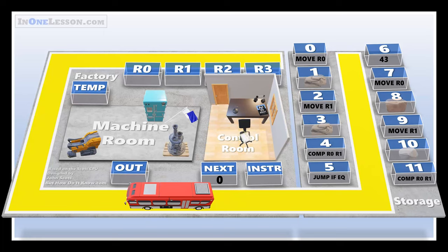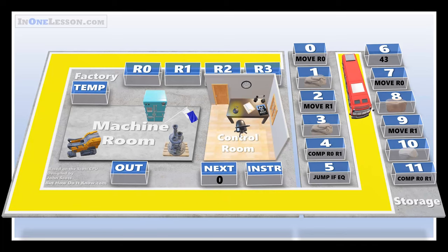The boss cycles through the same six-step checklist for every instruction and uses the clock to stay on pace. The first item on the checklist says to make a note of the number that is in the next container, and then to radio the bus driver to fetch that instruction from storage.